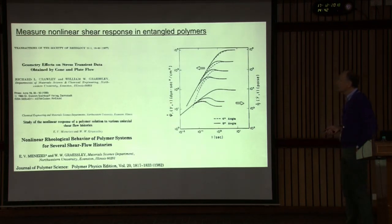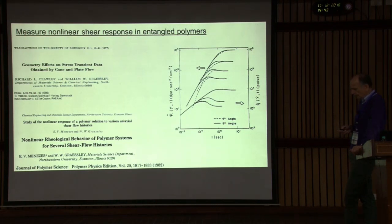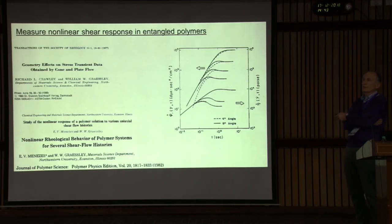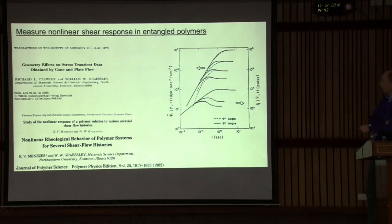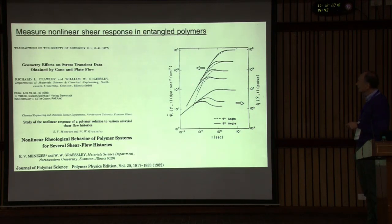Going back to experiments, Bill Graessley is one of the legends who is perhaps the father of molecular rheology. He identified the need for well-defined polymers synthesized with proper chemistry — mainly anionic polymerization — and used cone and plate rheometry to ensure a uniform shear rate. He studied polymer solutions in the entangled state, measuring transient viscosity. Data were taken with two different cone angles, and for the two different geometries there are some differences suggesting that early times are problematic.